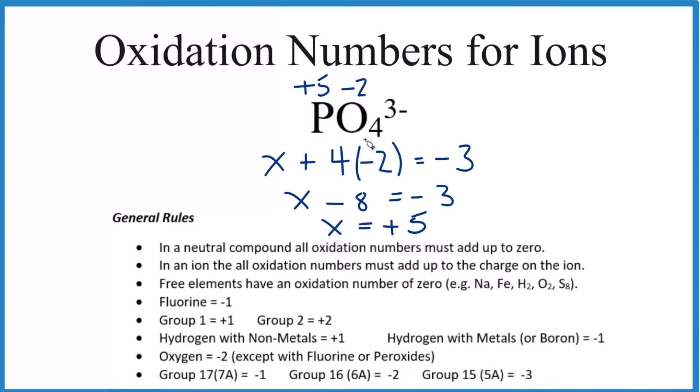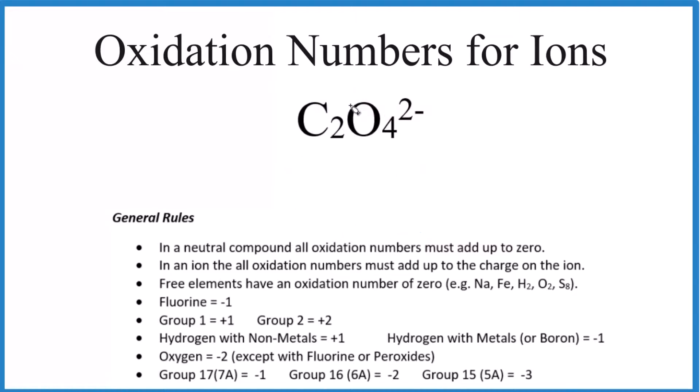Let's do one last one. Find the oxidation number for each carbon here in the oxalate ion. So for this one, since we have two carbons, we just say 2x. And carbon's another one that really doesn't show up in our rules, so we have to figure out by what it's bonded to. In this case, each carbon is plus 3, has an oxidation number of plus 3.